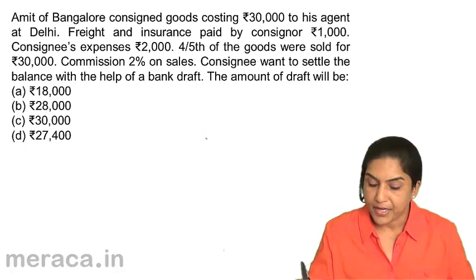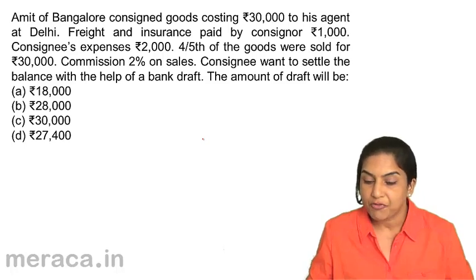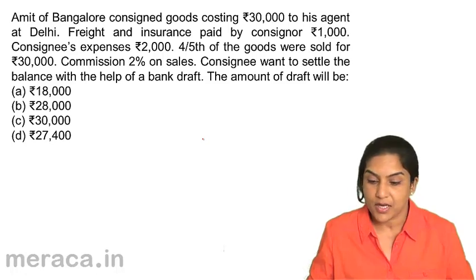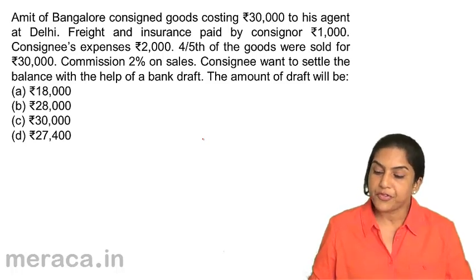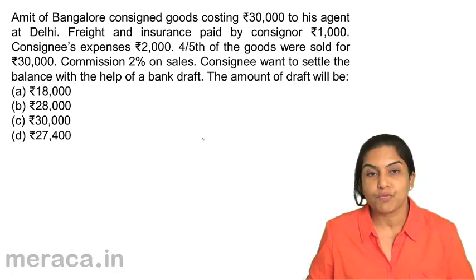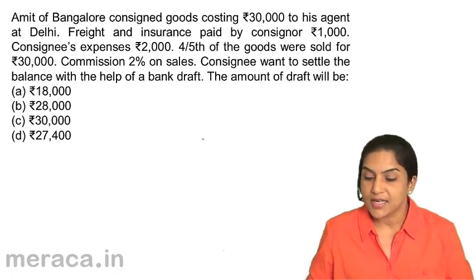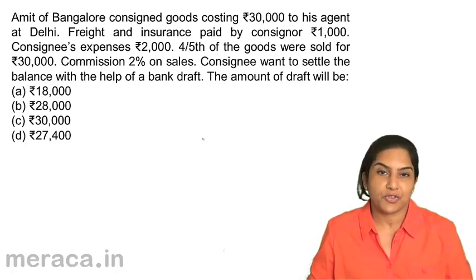Amit of Bangalore consigned goods costing 30,000 to his agent at Delhi. Freight and insurance, paid by the consigner, Rs. 1,000. Consignee's expenses, Rs. 2,000. Four-fifths of the goods were sold for Rs. 30,000. Commission is 2% on sales. The consignee wants to settle the balance with the help of buying a draft. What is the amount of the draft?